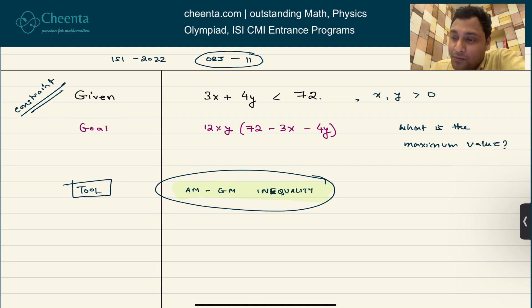The goal is to maximize the value of this quantity: 12 times x times y times 72 minus 3x minus 4y. We have to find out the maximum value this quantity can attain with this particular constraint that 3x plus 4y is less than 72.